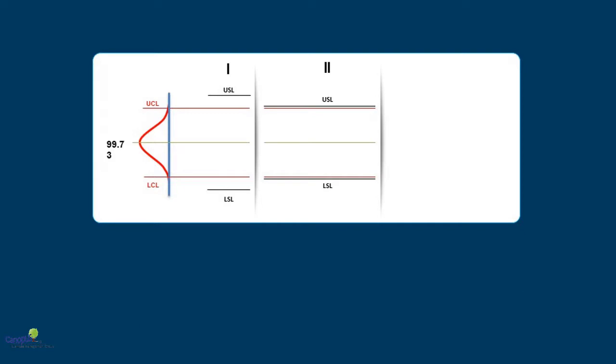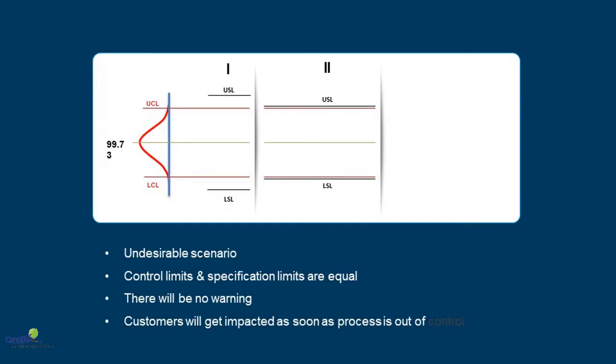Scenario 2 is one where the control limits and specification limits are same. If the specification and control limits are same, then there is no warning at all. The moment a data point goes outside the control limit, it is also breaching the customer limits. As a result, the customers will get impacted as soon as the process goes out of control. Now as the owner of the process, you will have very little leeway to find out what can be done to prevent the customers from getting impacted by the poor performance of the process. So this situation is undesirable.